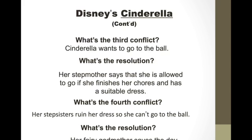What's the third conflict? Now we're getting into the major part of the story. Cinderella would like to go to the ball. She's heard from her stepmother and stepsisters that there is a ball at the castle with the prince. The resolution? The stepmother says she's allowed to go if she finishes her chores and has a suitable dress. But there's a fourth conflict: once she finishes her chores and her dress, her stepsisters ruin it so she can't go to the ball. And then we have a resolution — our fairy godmother steps in and saves the day.